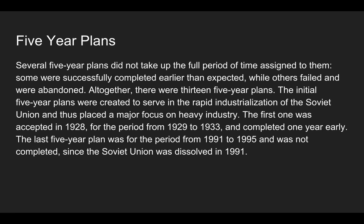Even though these are called five-year plans, they sometimes didn't actually take five years, which is confusing. Some were completed earlier than expected while others failed and were completely abandoned. During the reign of Stalin there were 13 five-year plans. The initial five-year plans were created to serve the rapid industrialization of the Soviet Union — they were really trying to catch up to the rest of Europe, placing major focus on heavy industry. The first was accepted in 1928 for the period 1929 to 1933 and was completed in four years — one year early. The last five-year plan was for 1991 to 1995 and was not completed since the Soviet Union dissolved in 1991.